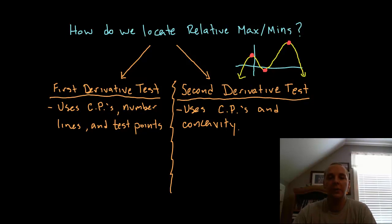So to find relative extrema, if you want to locate where they are for a particular function, you'll use one of two tests. One is called the first derivative test and the other is called the second derivative test.